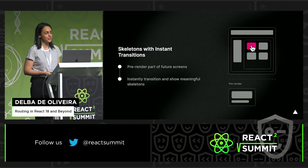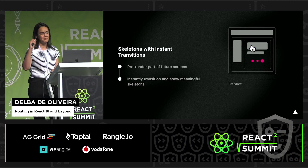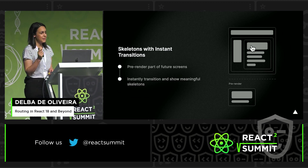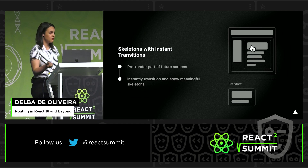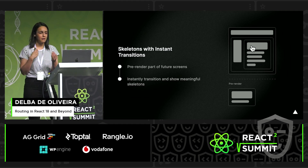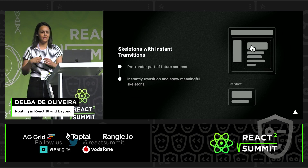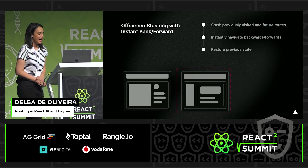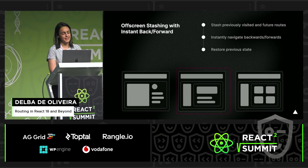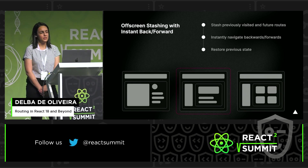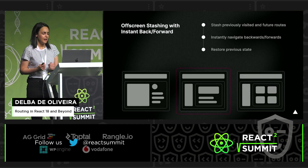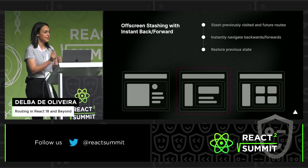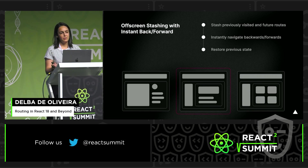We can also improve the navigation experience further by pre-rendering a very small but minimal part of your screen. When you navigate between screens, the navigation will be immediate, and the user might see something like a cover photo or a title before the rest of the content loads. And one of my favorites: we will also be able to stash routes — we can pause previous routes and pre-render future routes so that when the user navigates, we restore the state.